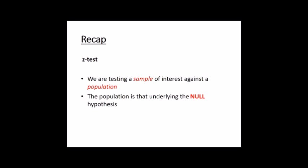Z-tests involve testing a sample against the population of the null hypothesis to see if it's weird or not. But the key thing to do this is we have to know the population parameters — both mu and sigma. We can't usually take lots and lots of samples to work out the sampling distribution, so we need to know these to determine if our sample is weird. To do a Z-test, we have to know both things about our population.